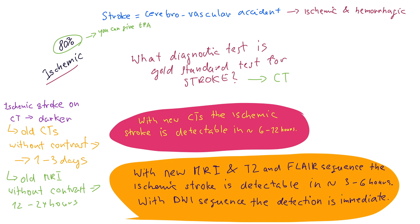How can CT be the gold standard if ischemia doesn't show up right away? Because when you're having a stroke with paresis, you immediately send the patient to CT — and what you want to know right away is: is there bleeding? Hemorrhagic stroke shows up immediately on CT as a white mass. So you exclude bleeding — if there's no white mass, it must be ischemic, and you can immediately give TPA.